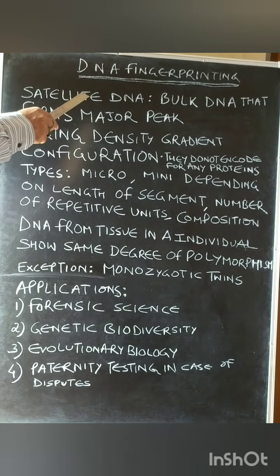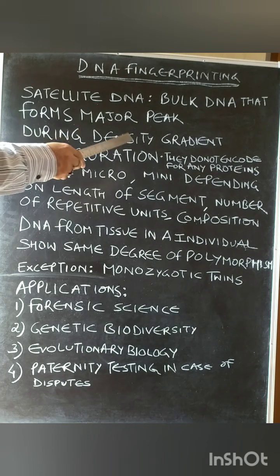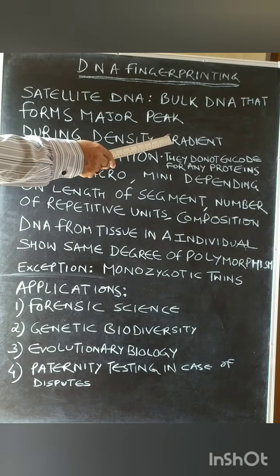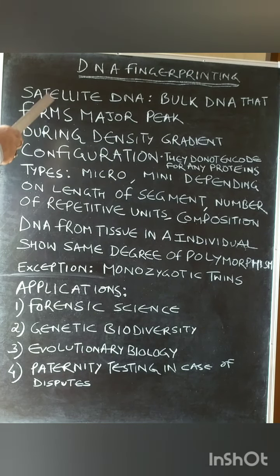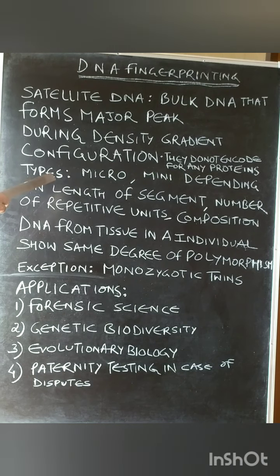Satellite DNAs are bulk DNA that form a major peak during density gradient configurations. They do not encode for any proteins and have a number of repetitive units. They are of many types depending upon the length of the segment, number of repetitive units, and composition, and are basically divided into micro and mini satellite DNA.